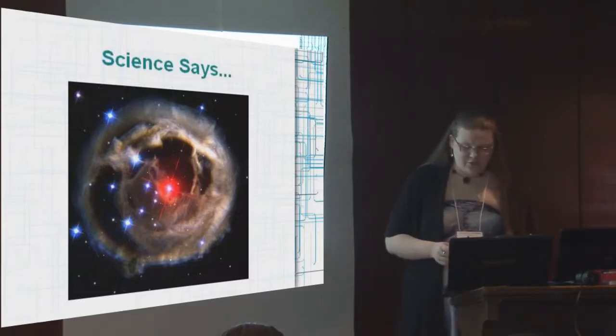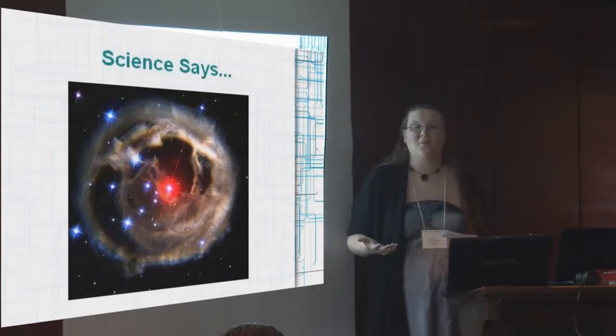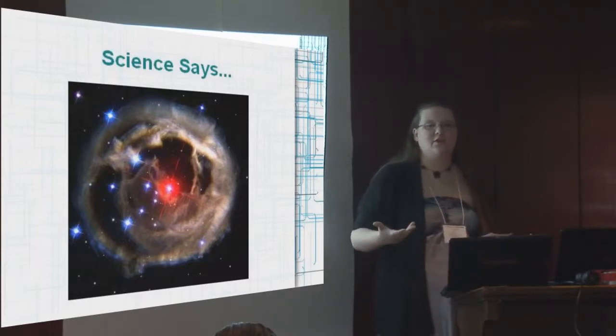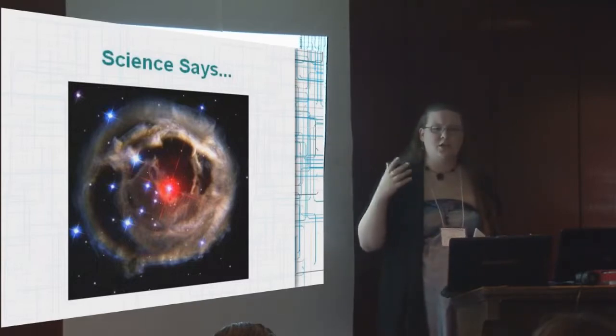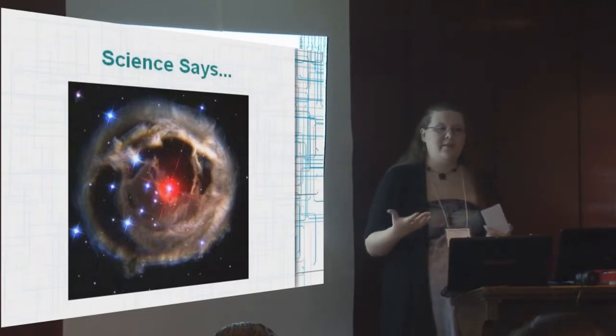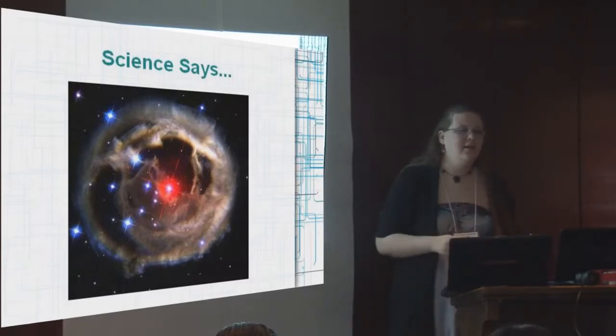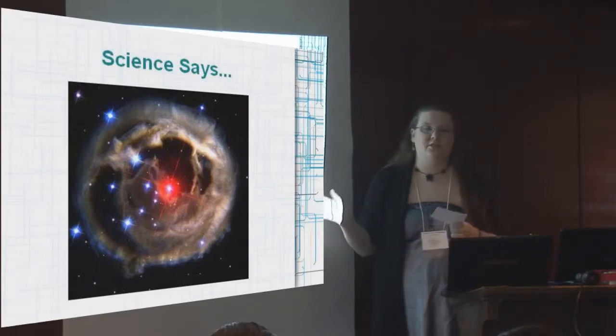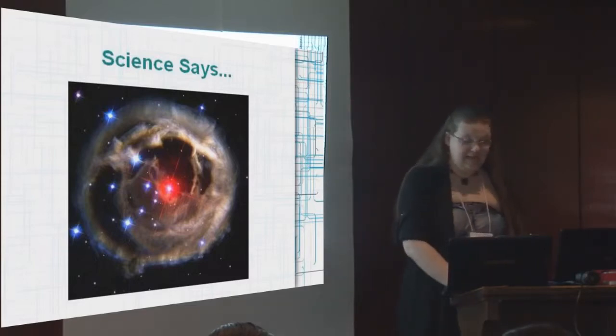It's also something interesting to note is that they often latch on to this theory of Nemesis, which is a proposed companion star to the sun. And somebody had come up with the idea that extinctions are more cyclical than they appear, and so maybe this companion star causes us to fly into an asteroid belt every approximately 27,000 years. And this is actually a scientific theory that isn't completely debunked yet, but has nothing to do with this. They're just sort of latching on to it to give themselves a little tiny bit of credibility.